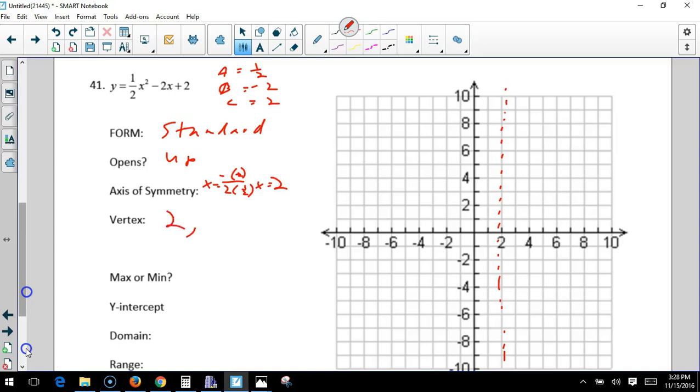So my vertex is going to be 2 comma something. Again, I can plug it in. 2 squared is 4, half of that is 2, minus 2 times 2, plus 2. Or if I go to my calculator, I have entered in and I'm going to need it to get some other points. 2 to 0, 0 to 2, 4 to 6, 6 to 8.